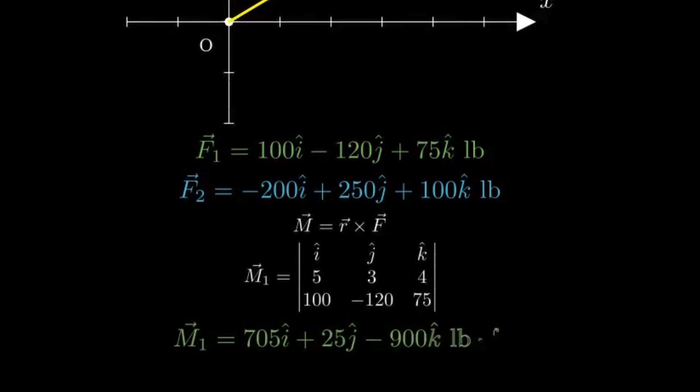Calculating this out, we get M1 equals 705i plus 25j minus 900k pound-feet.